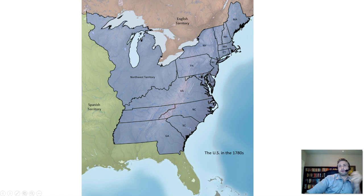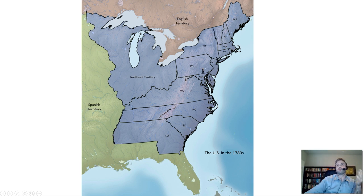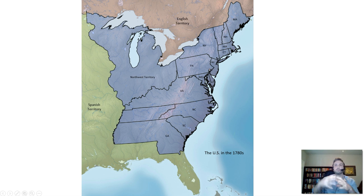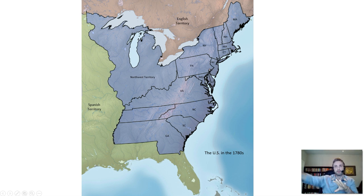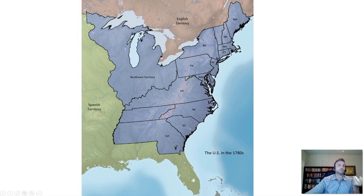Under the Articles, each state got one vote regardless of size — Pennsylvania, New Jersey, and New York each sent one representative. From 1777 when the Articles were first sent to the states through 1783 and the end of the Revolution, the government's primary concern was simply beating Britain — getting as much money together as possible to defeat the British, with everything else to be figured out later.